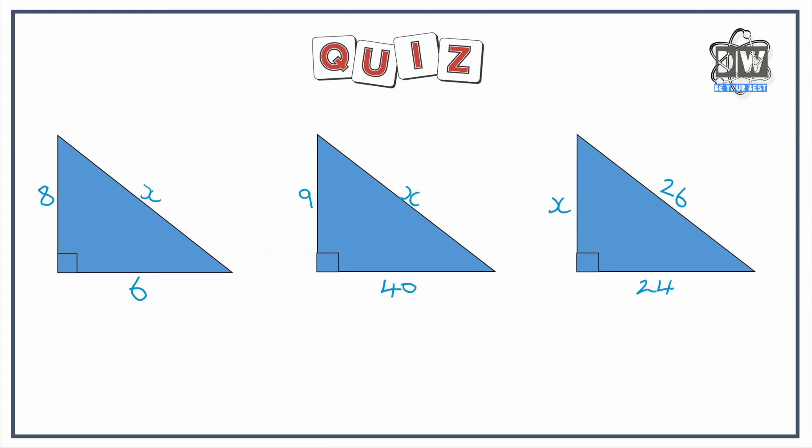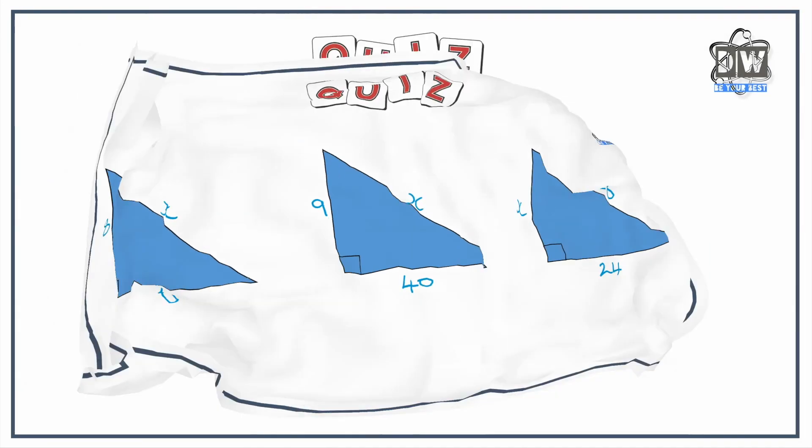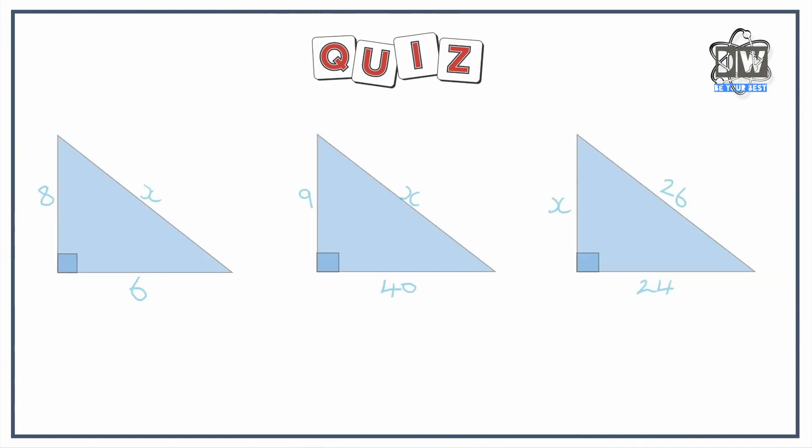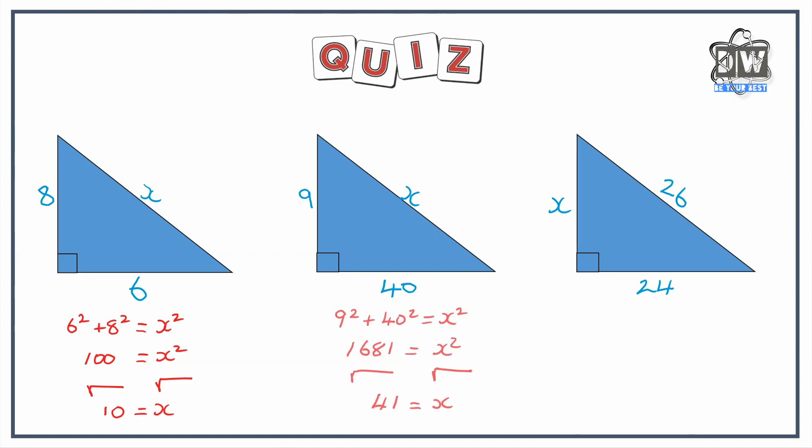Hopefully you've had some time to do all that. Let's just check the answers now. For the first one we had 6 squared plus 8 squared equals x squared, we've got 100 equals x squared, square root of that is 10. The next one, we've added them together to get 1681, we square root that to give us 41.